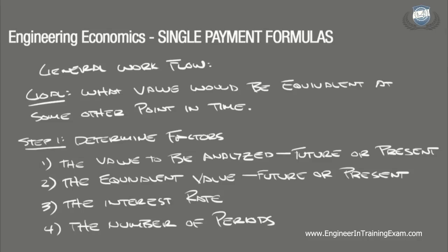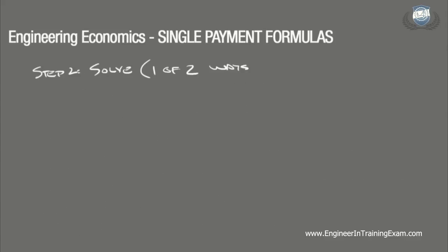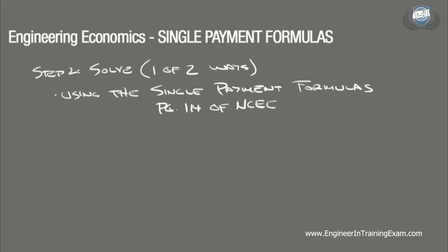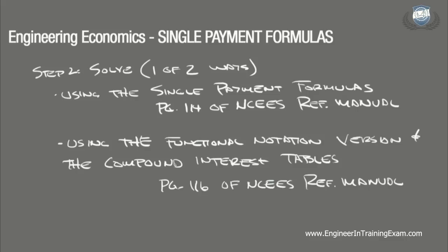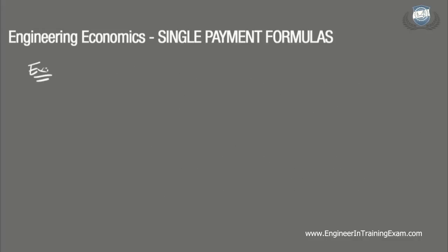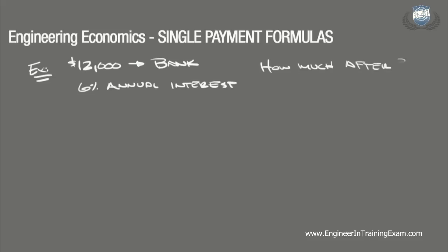Once the variables are defined, we can solve these problems in one of two ways. A business owner puts $12,000 into a bank account with a 6% annual interest rate. What would the equivalent payment be after three years? The goal is to determine what payment would be equivalent three years down the road had the business owner invested $12,000 now at a 6% annual interest rate.